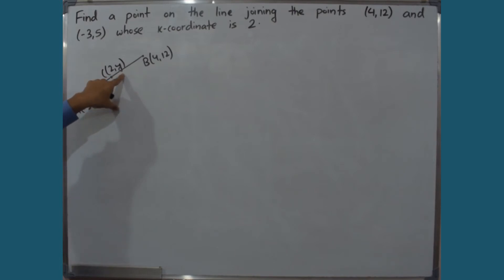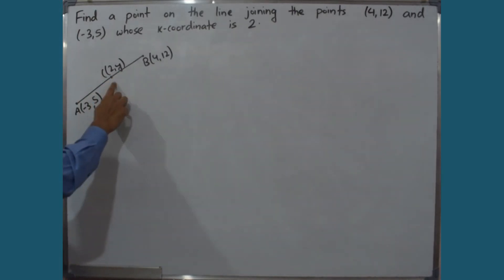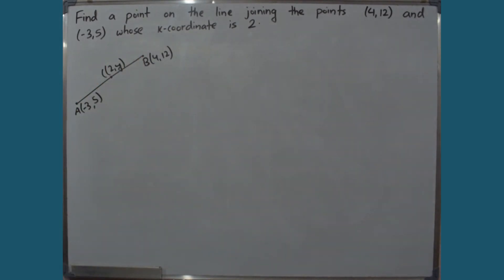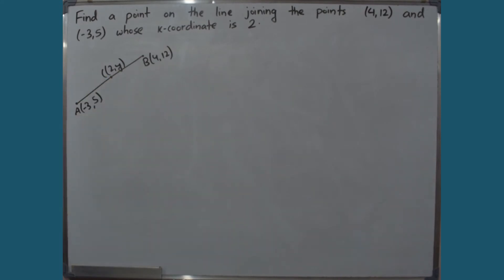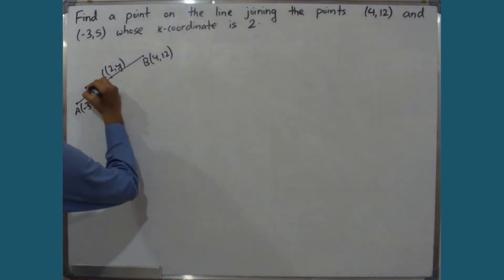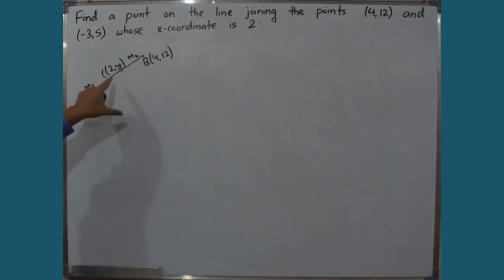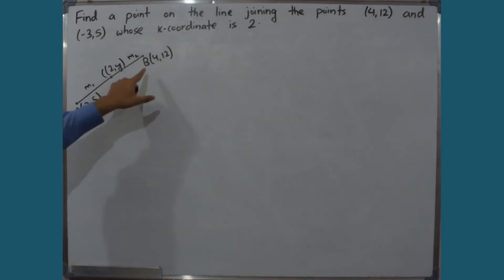To find the y-coordinate, we note that point C divides line AB in ratio M1 to M2. Let M1 is to M2 be the ratio in which the point C of (2, Y) divides the line joining the points A of (-3, 5) and B of (4, 12).